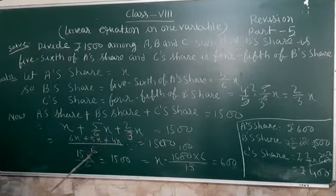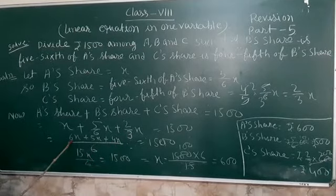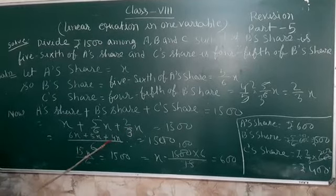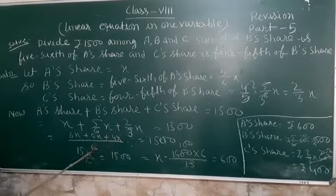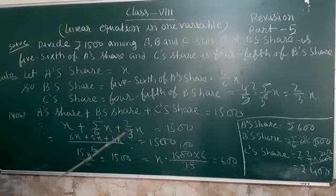So, 6 and 3 have common denominator 6. So, 6X plus 5X plus 4X. This 4, how it will become? You divide 6 by 3, the answer is 2. Now, we multiply 2 by 2.